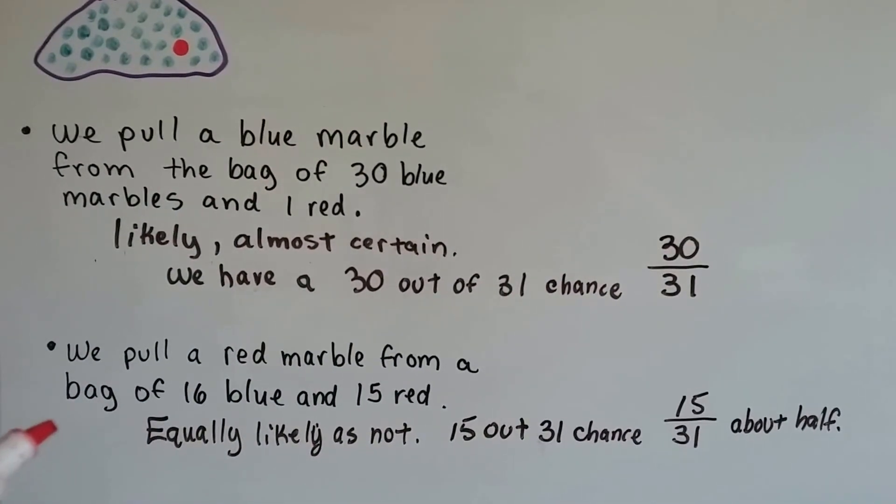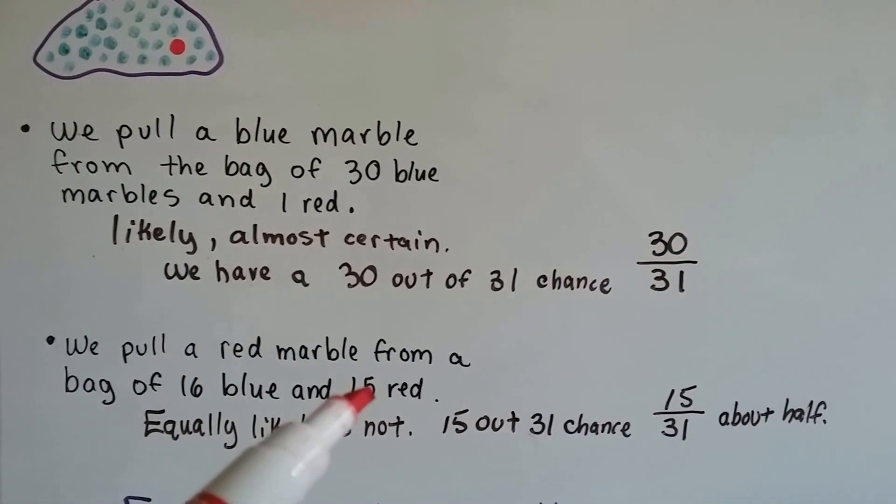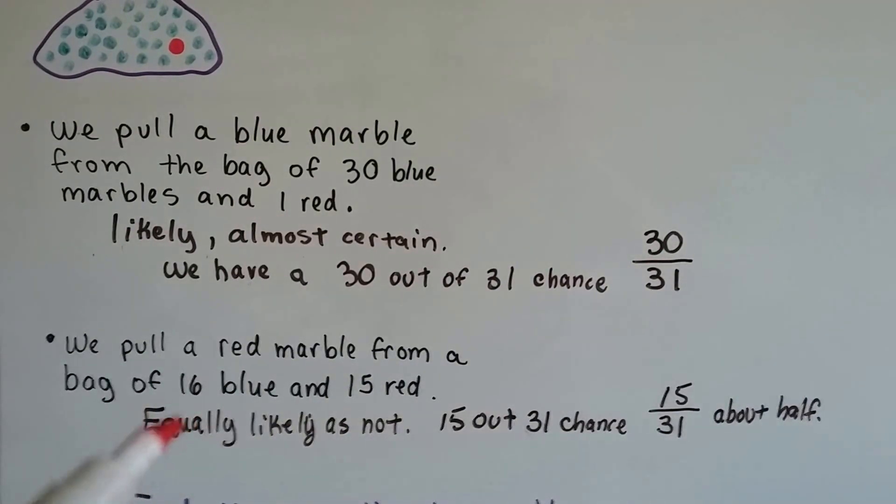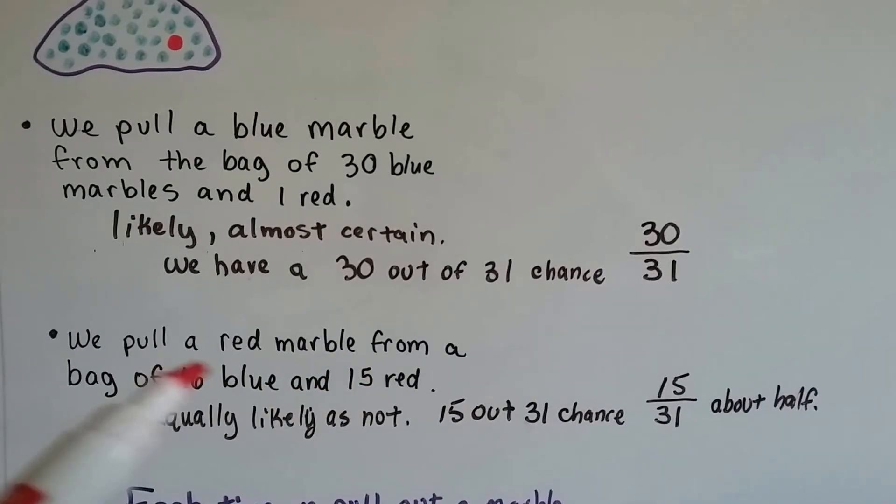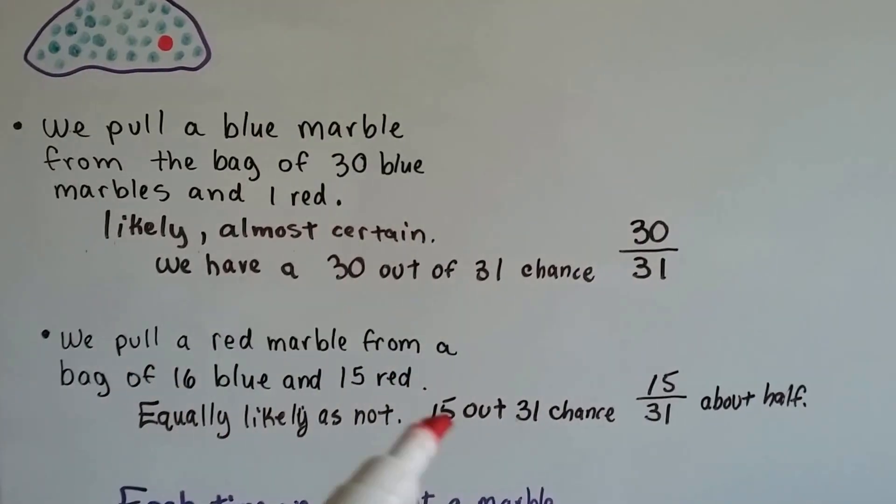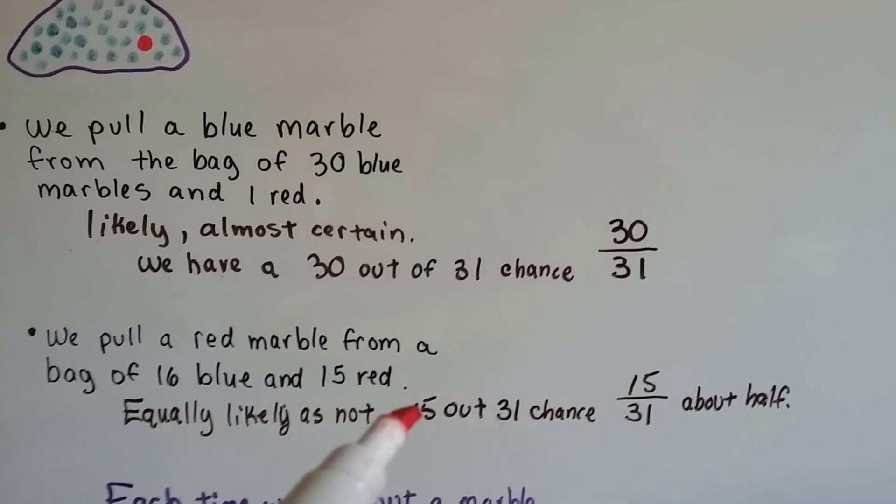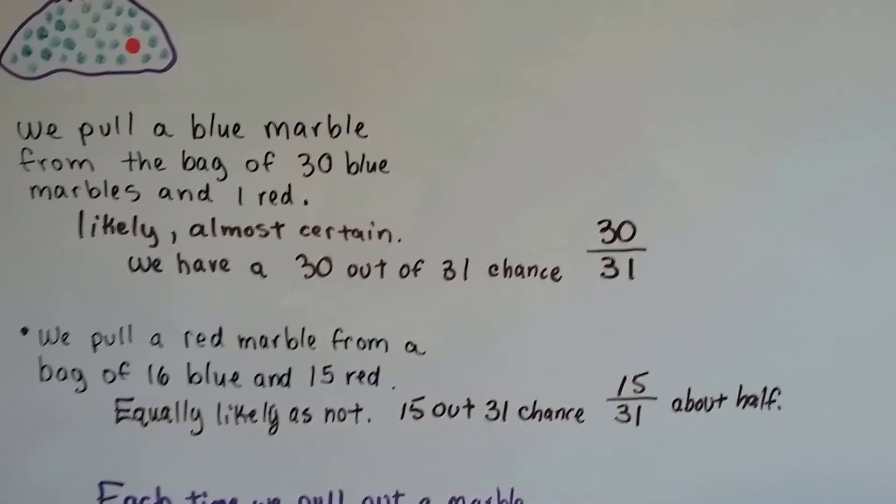How about if we pull a red marble from a bag of sixteen blue and fifteen red? Well, it's equally likely as not likely. Because there's almost an even amount of colors, it could go either way. You have a fifteen out of thirty-one chance. That's about half.